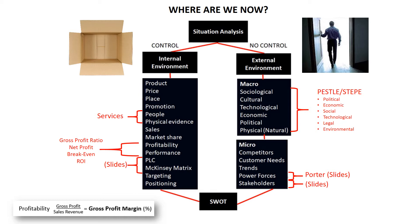Generally, you have control only over the internal environment, and there is little you can do about the external environment. To help you better assess the internal environment, you must first describe what your client is doing in terms of their product — how are they pricing it, how is it distributed or placed, and how is it promoted? The people and physical evidence are particularly important for service products.